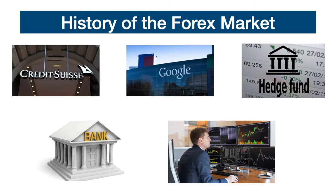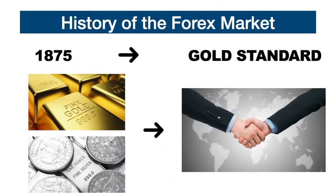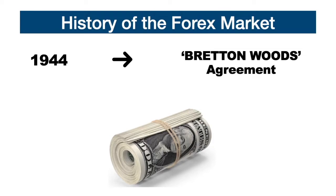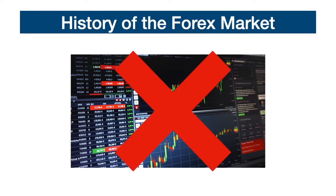Decades ago, the forex market was only accessible to financial companies, large corporations, hedge funds, central banks, and investors with large amounts of capital — retail traders didn't have access. The first method of exchange in the form of currency was in 1875 with the birth of the gold standard, in which gold and silver became the main currencies for global payment. Later in 1944, it was established that the US dollar would take the place of gold, becoming the main global exchange currency. The forex market was not invented as a form of speculation, but was created to facilitate the exchange of currencies in global affairs between international companies.